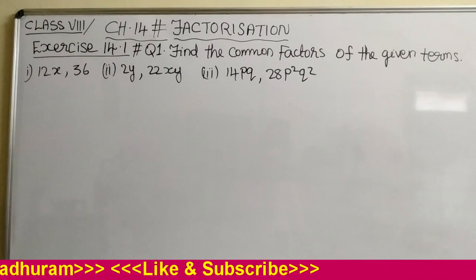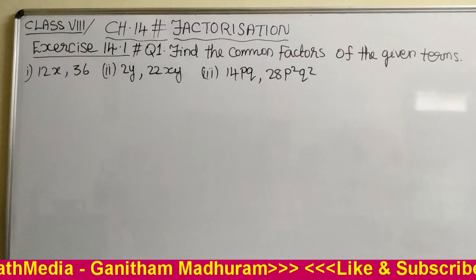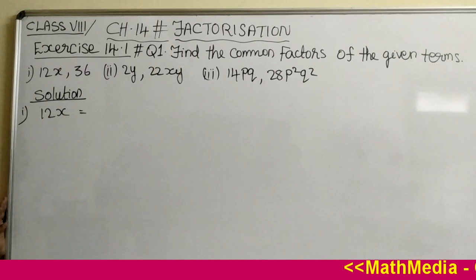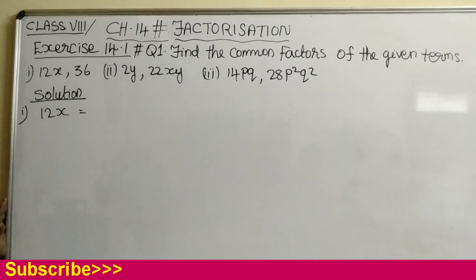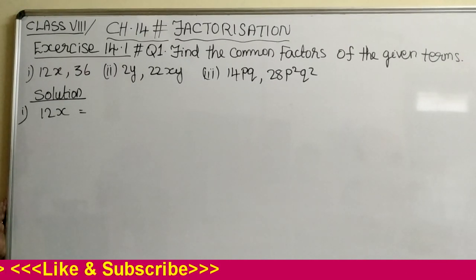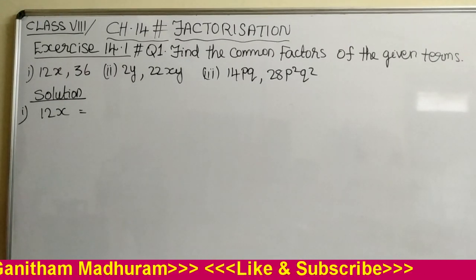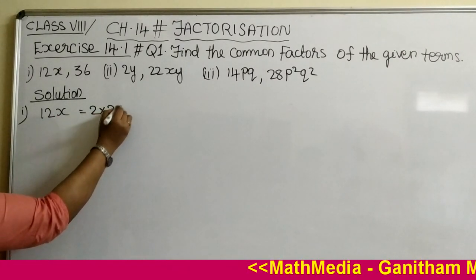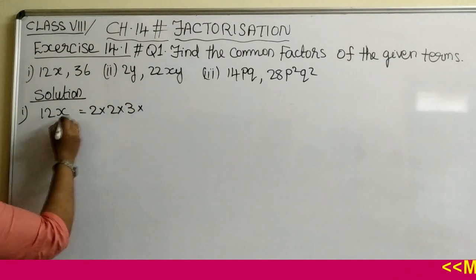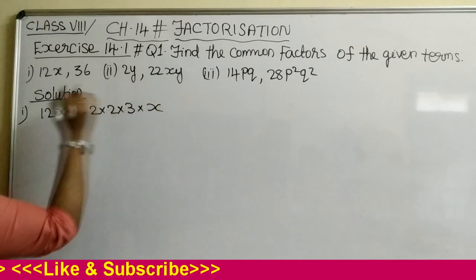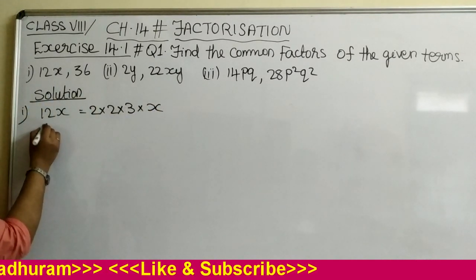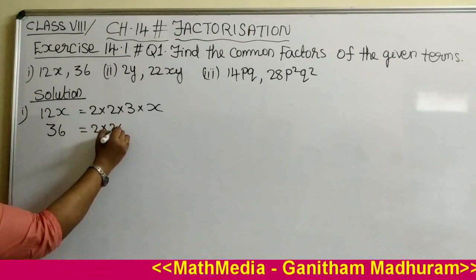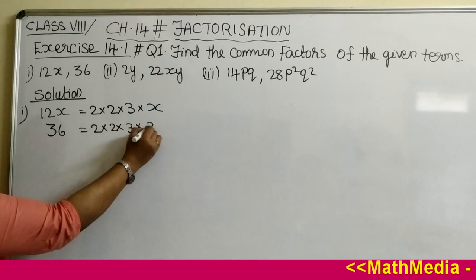Two terms are given and we can find the common factors of these two terms. Let's solve the sum. 12x is the first term. We can factorize this one. The factors of 12 are 2 into 2 into 3, and the factor of x is x only. Next is 36, which can be written as 2 into 2 into 3 into 3.